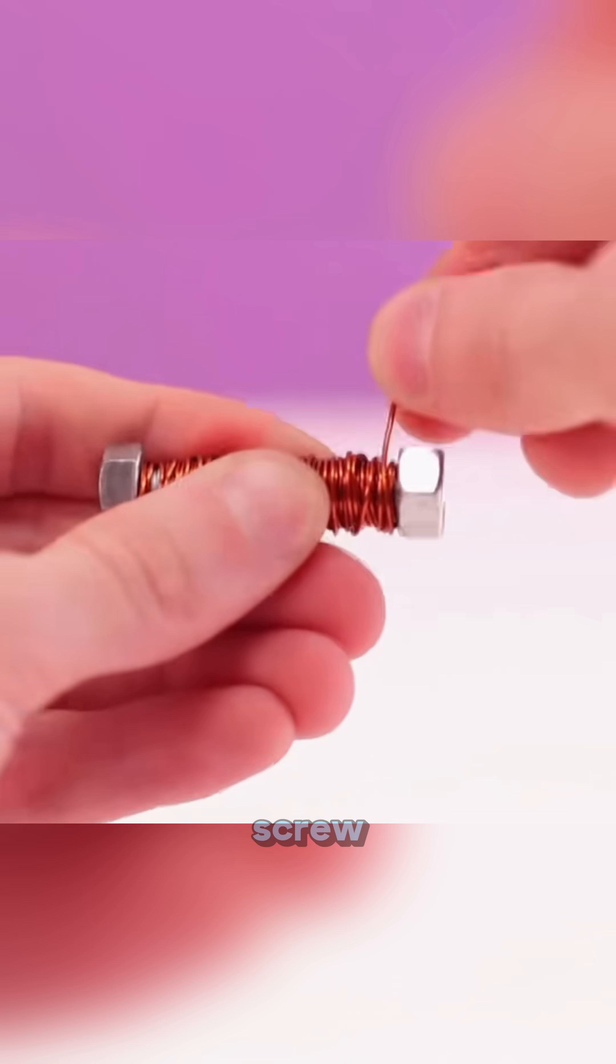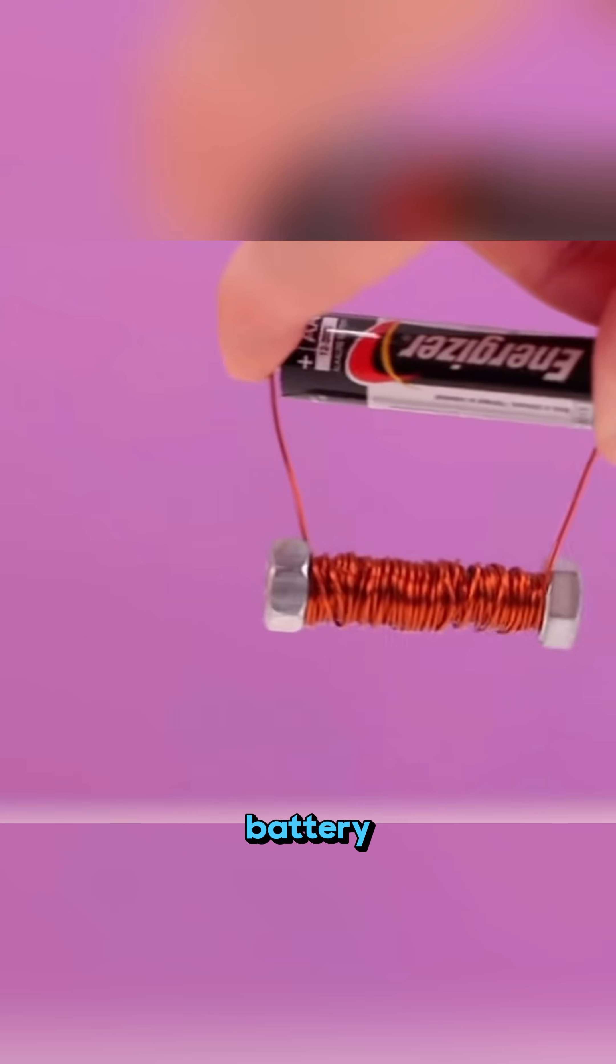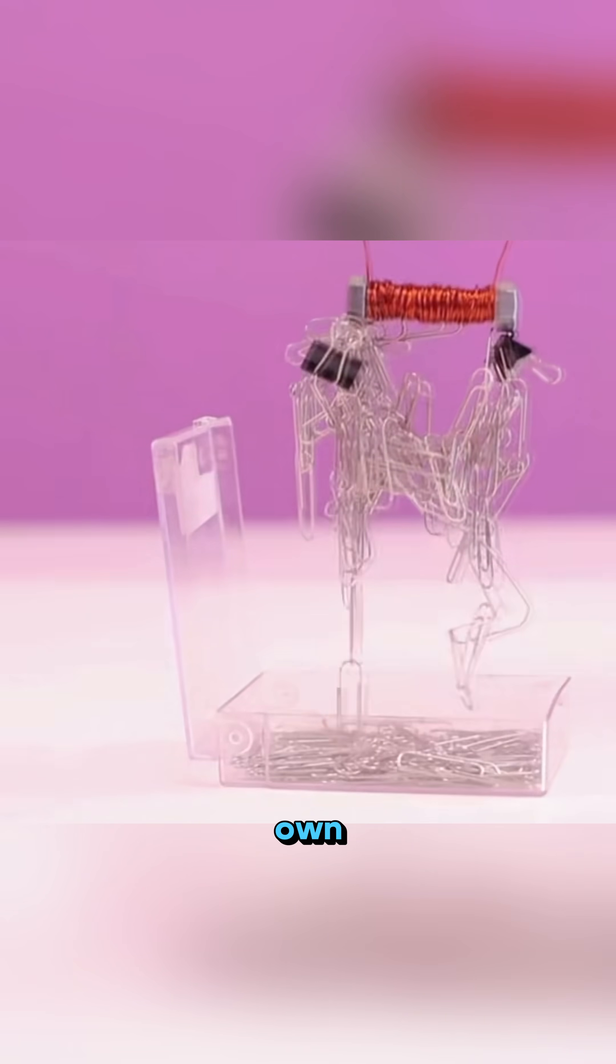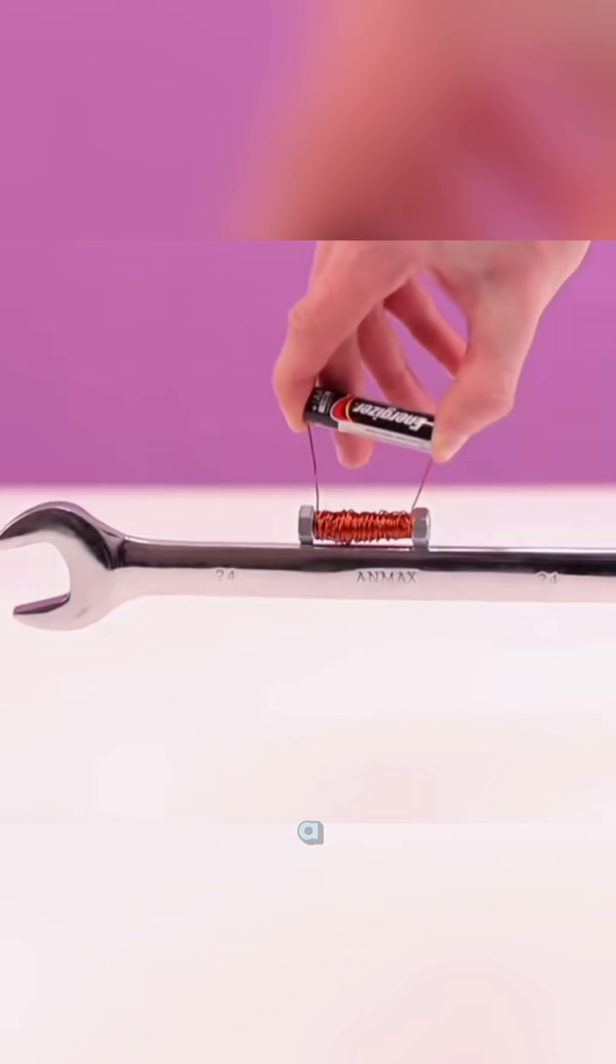Wrap some copper wire around a screw, connect both ends to a battery, and you've built your own electromagnet, just like a crane.